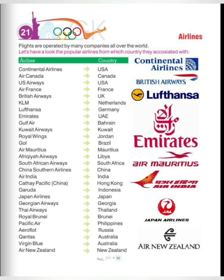Now we move to chapter number 21: Airlines. Flights are operated by many companies all over the world. In this chapter we will read the names of different airlines and their associated countries. First is Continental Airlines, USA. Air Canada, Canada. US Airways, USA.